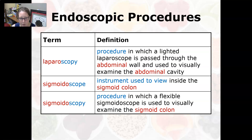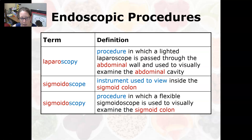A sigmoidoscope is an instrument used to view the inside of the sigmoid colon — the S-shaped part toward the end of the colon just before the rectum and anus. Sigmoidoscopy is the procedure in which a flexible sigmoidoscope is used to visually examine the sigmoid colon. That concludes the diagnostic procedures for the gastrointestinal system.